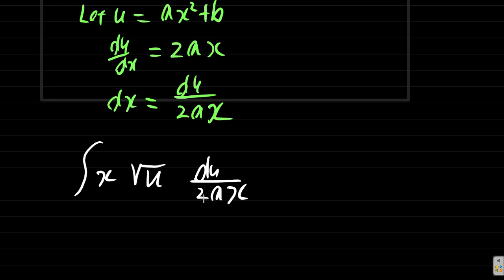Now, you will see something here. x will cancel x. This x is in the numerator and this one is in the denominator, so they cancel. Now this can be written as the integral of the square root of u du, this is over 2a.